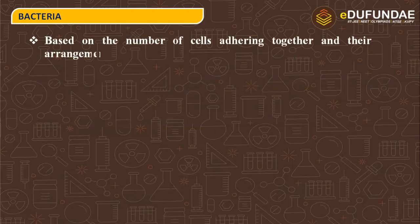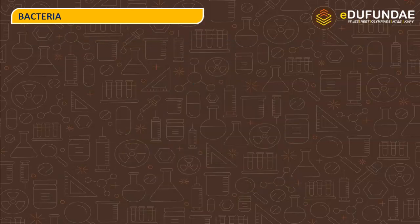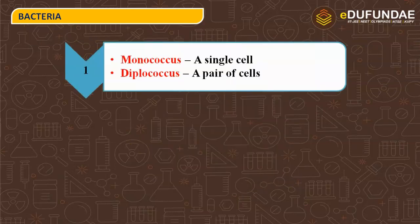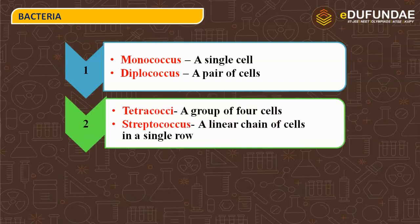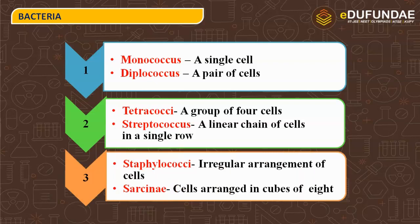Based on the number of cells adhering together and their arrangement, coccal forms are named as: monococcus — a single cell; diplococcus — a pair of cells; tetracocci — four cells; streptococcus — a linear chain of cells in a single row; staphylococci — irregular arrangement; and sarsina — cells arranged in cubes of eight.